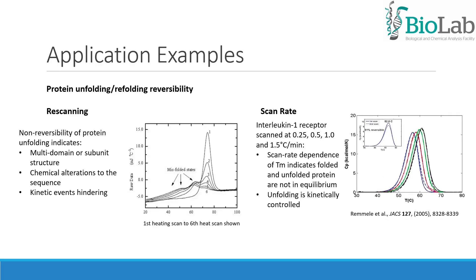With NanoDSC, we can gather information about protein unfolding and refolding reversibility. By acquiring and analyzing more than one scan of the same sample, we can see if the unfolding process is reversible or not. If the scans have different profiles, we can infer that the unfolding is non-reversible. Non-reversibility of protein unfolding indicates multi-domain or subunit structure, chemical alterations to the sequence, or kinetic events hindering refolding.